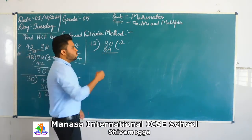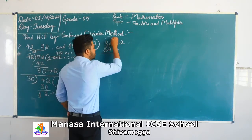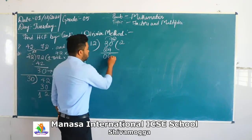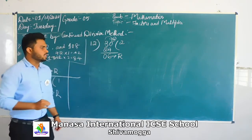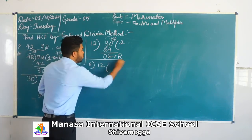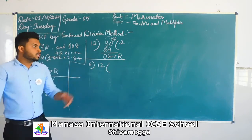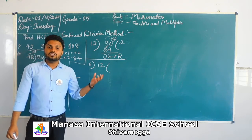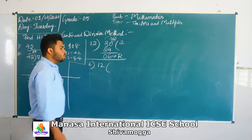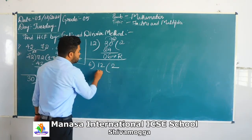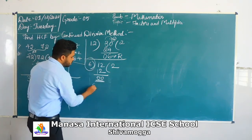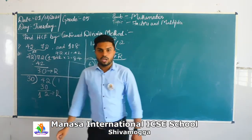So now 30 minus 24: you get remainder 6. Students, we continue this dividing process until we get remainder 0. So again take 6 and the previous divisor 12. 6 twos are 12. 12 minus 12 is 0. Now the divisor is 6 and the remainder is 0.